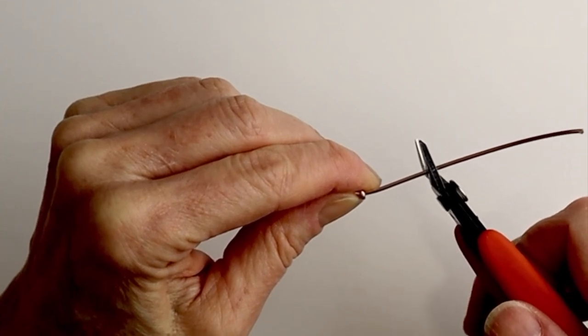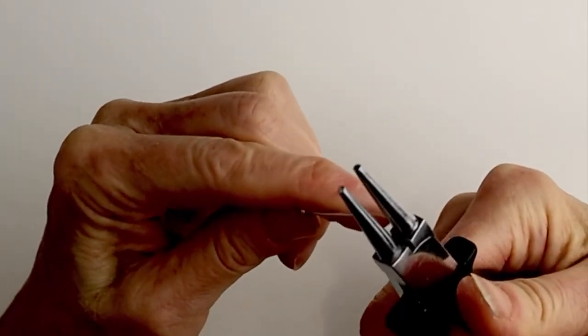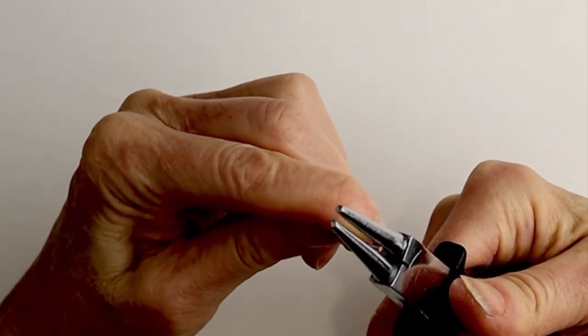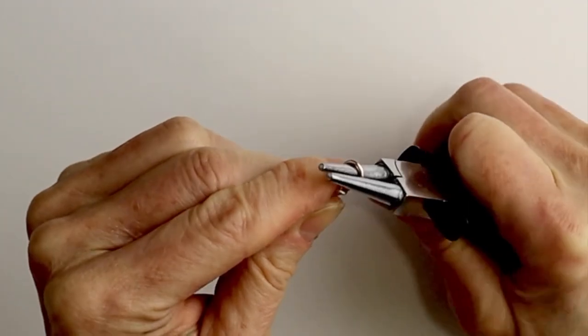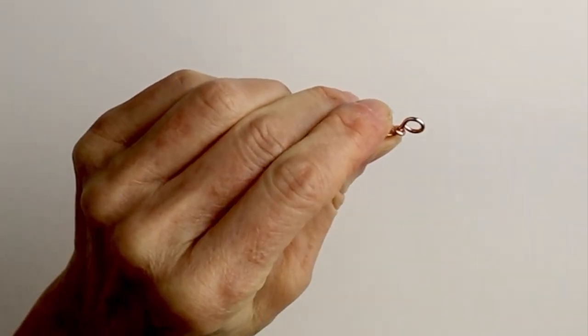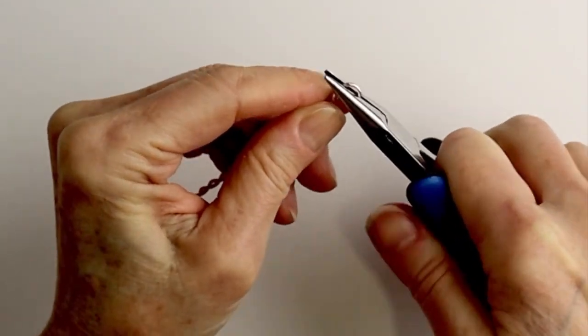And then the other end, we're going to cut it to about three quarters of an inch. Get your round pliers and form a loop on the end to make a sort of handle. And then you can use your flat pliers just to flatten it out a little bit.